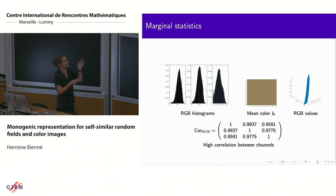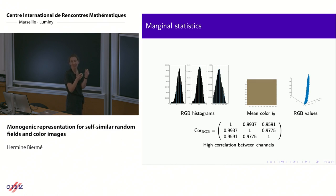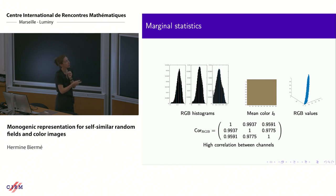Here you have the distribution of the values for each channel. You completely lose the spatial dependency with this representation. This may be used to define a kind of mean color: take the mean value of each channel, combine it as a vector, and you can display a constant color image given by the mean color of the wood texture. More interesting is when you draw the plot of the three values in the RGB cube — you can see that it doesn't fill the cube; it is very thin, meaning each channel is highly correlated.